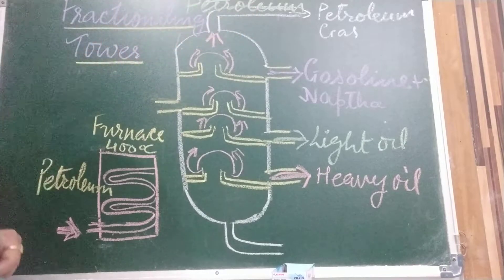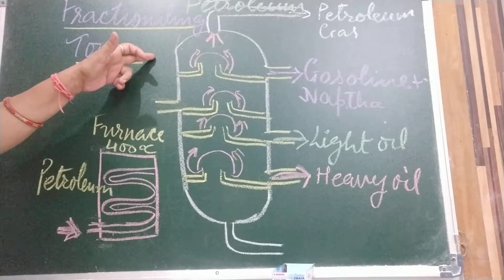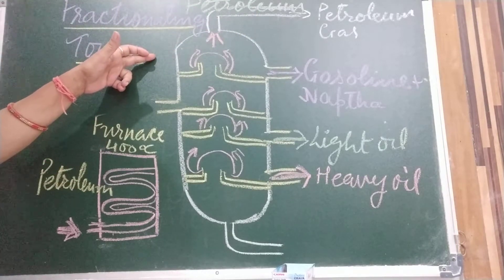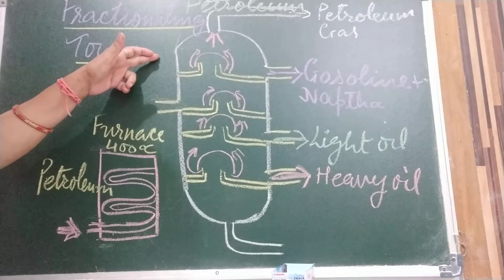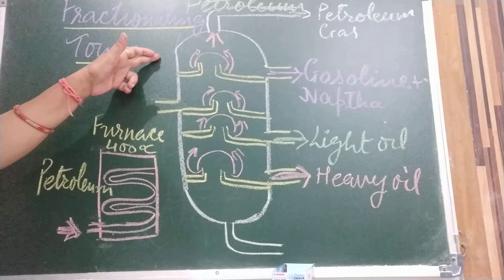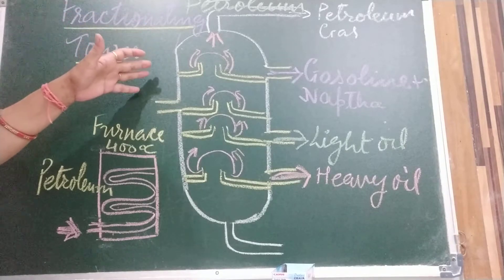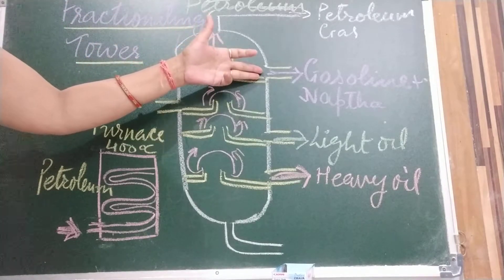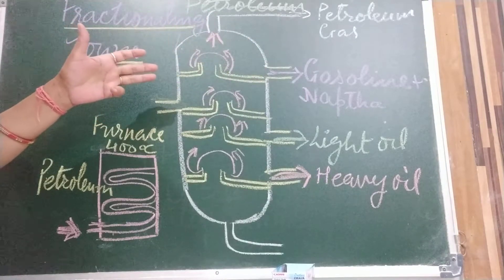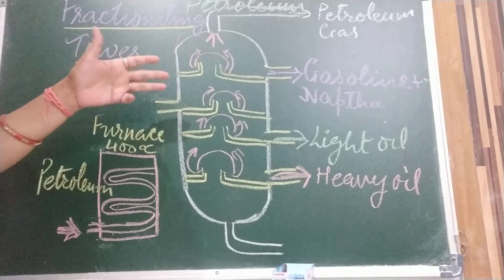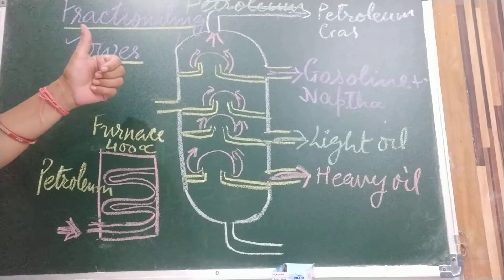First is LPG, and we also call it liquid petroleum gas. What is the use of LPG? Fuel for home and this is fuel for home and industry. Second is gasoline and naphtha. From this we get petrol. Petrol is used for motor fuel, aviation fuel, solvent for dry cleaning.